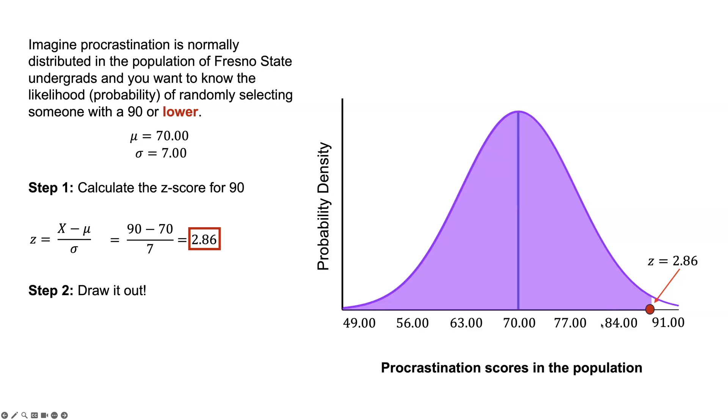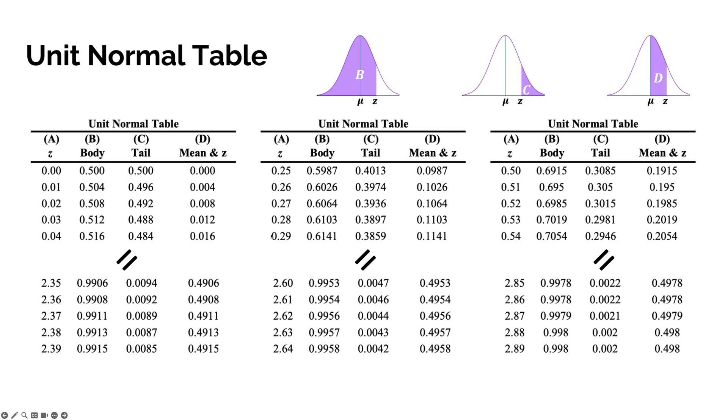We want to look for that in our unit normal table. So 2.86 is our z-score. These sideways equal signs just indicate a break in the table because I don't have room to show you the entire table. You can see we're looking for 2.86. We look in all of our A columns or z-score columns until we find it. There it is, 2.86.